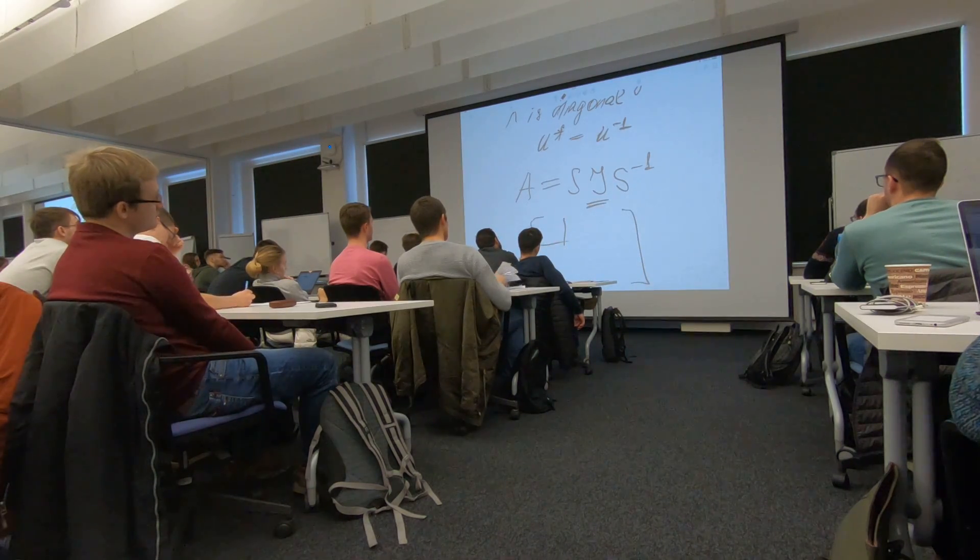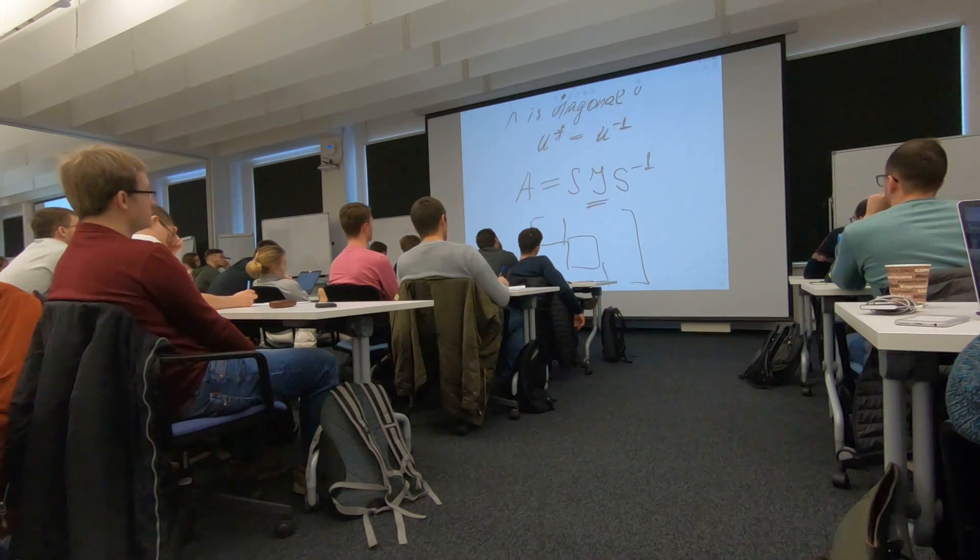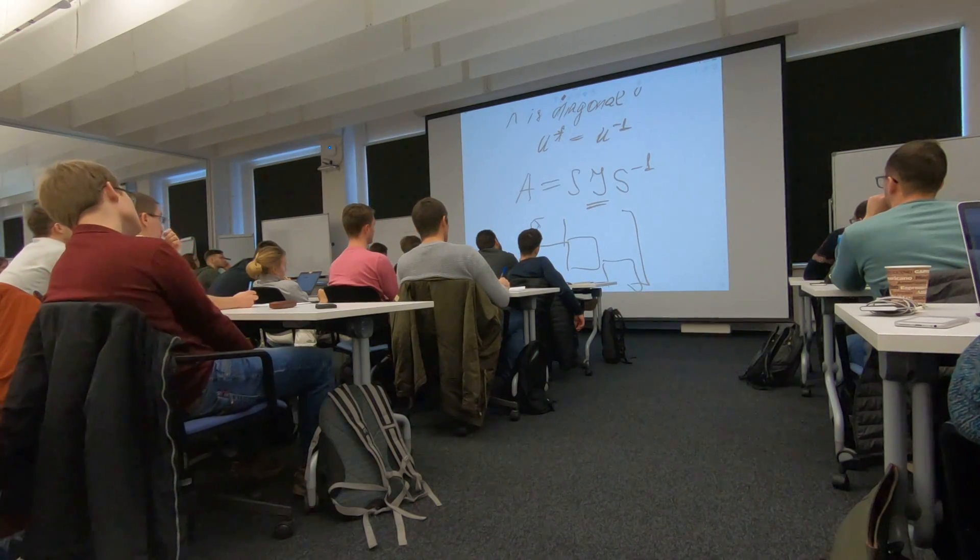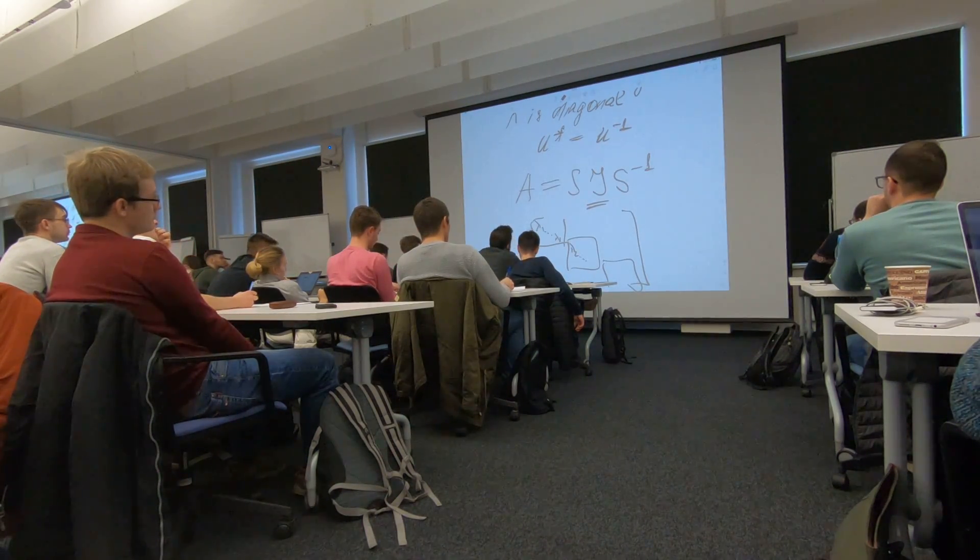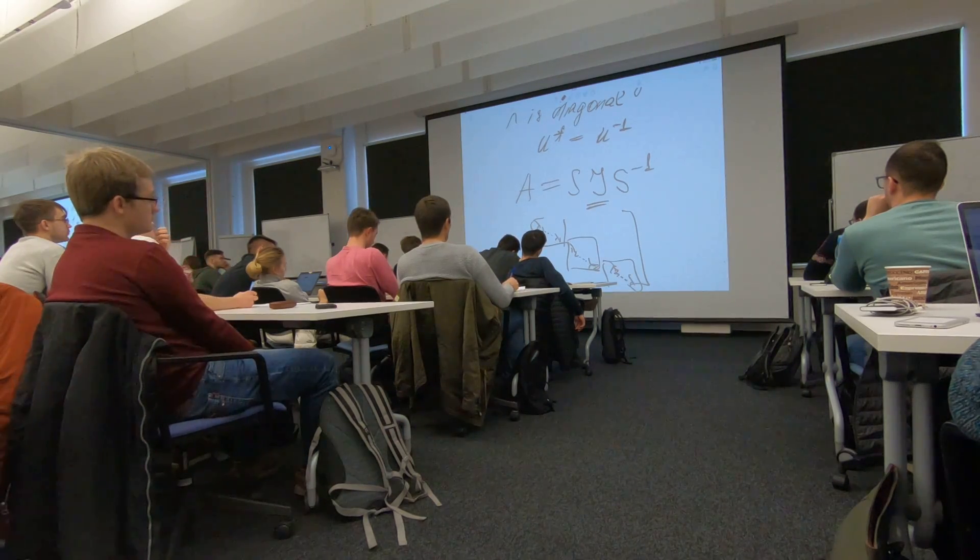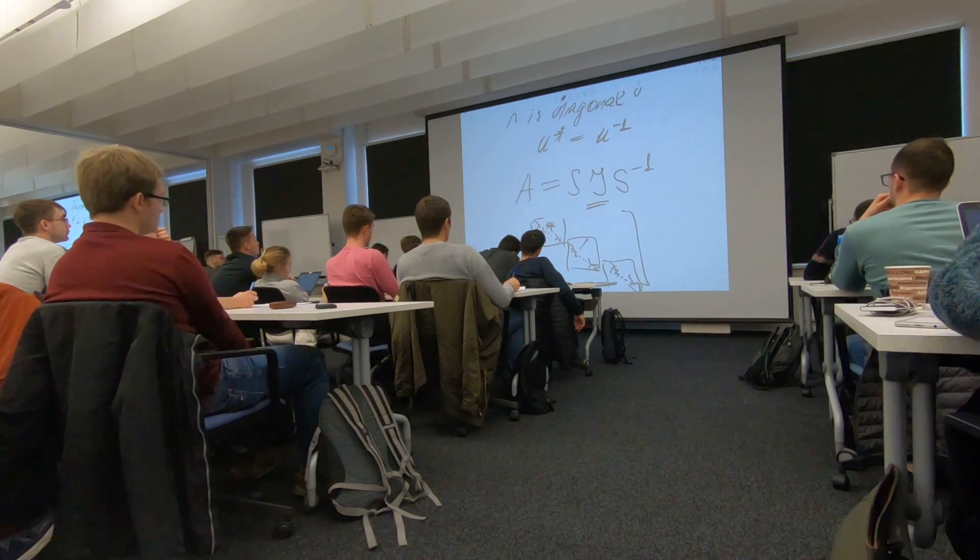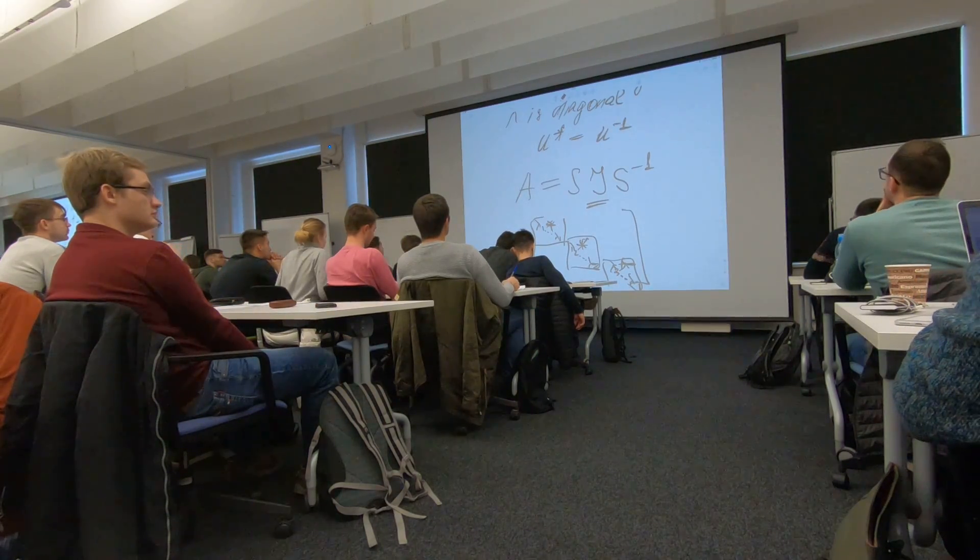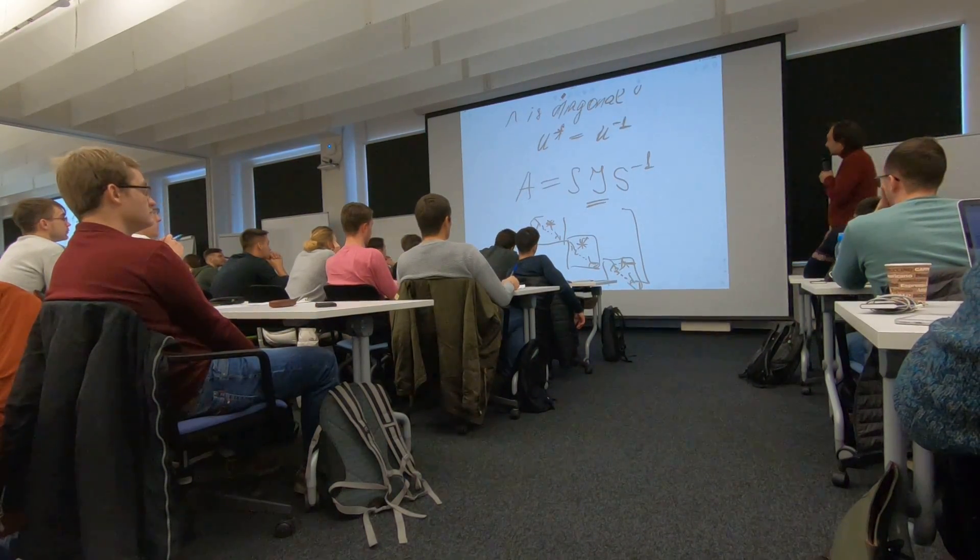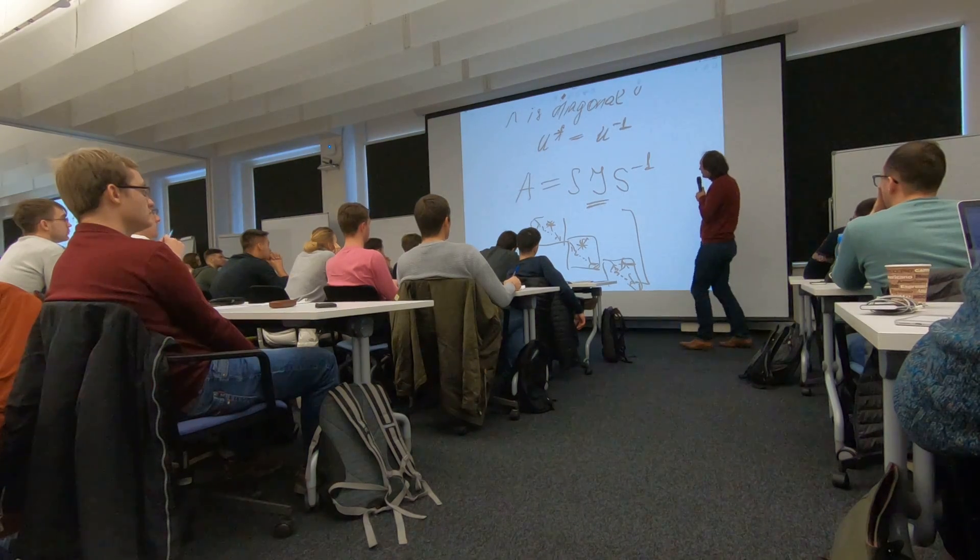Each block corresponds to one eigenvalue. So it has the same number, and there is also something here. So that's a brief view of the Jordan form.